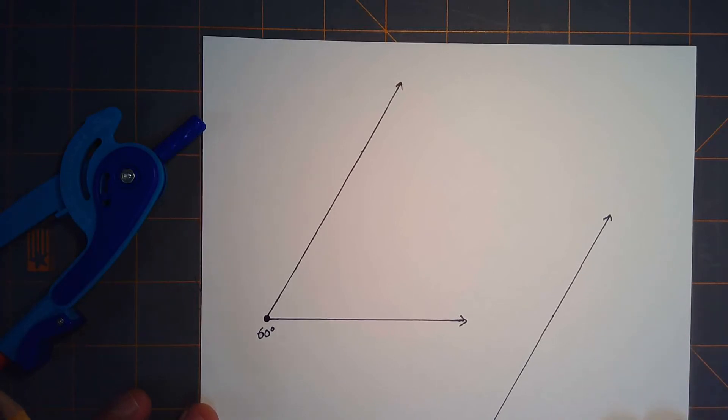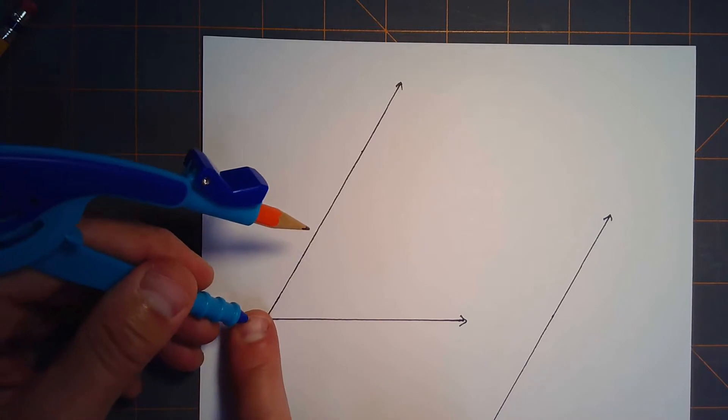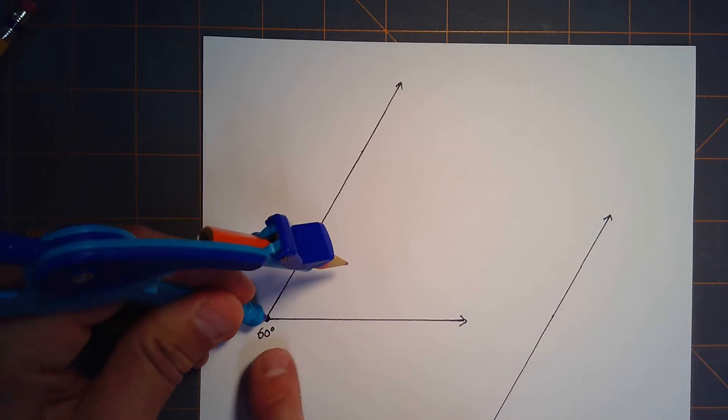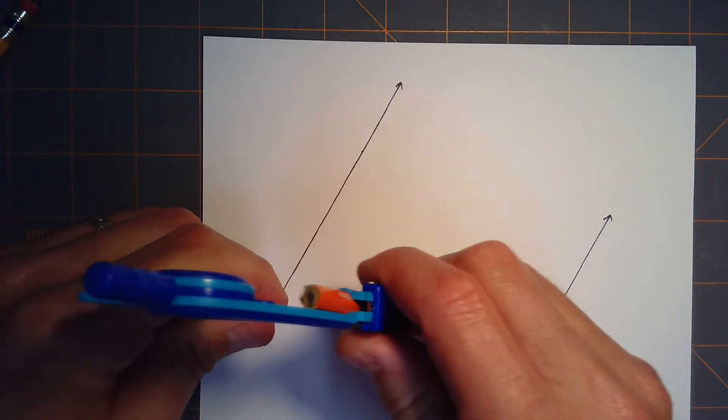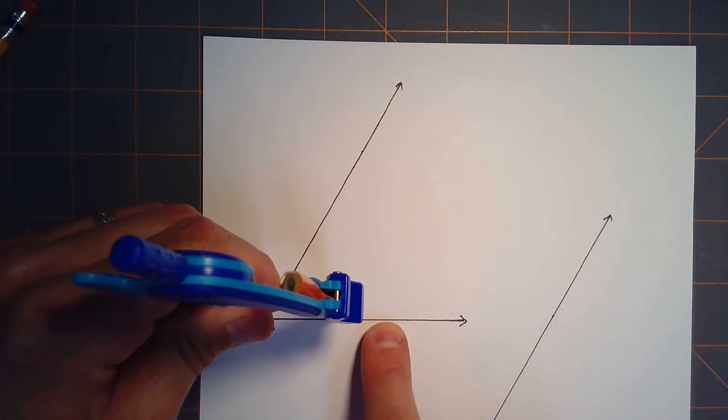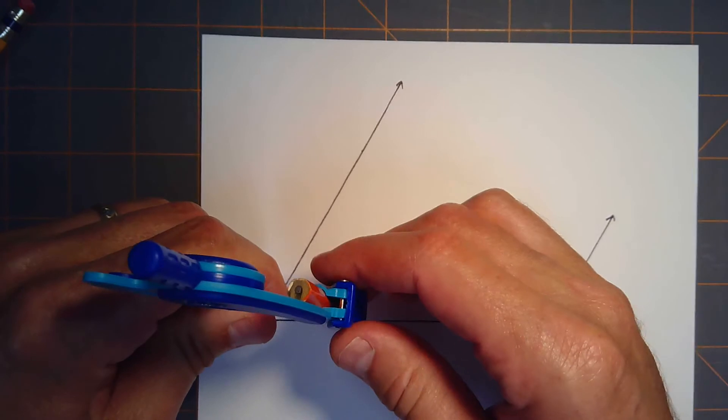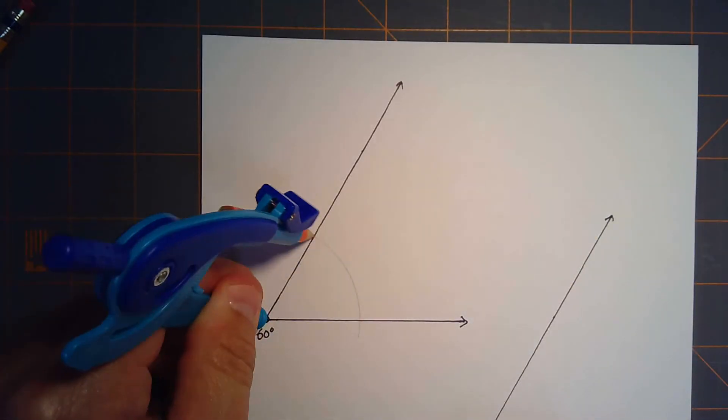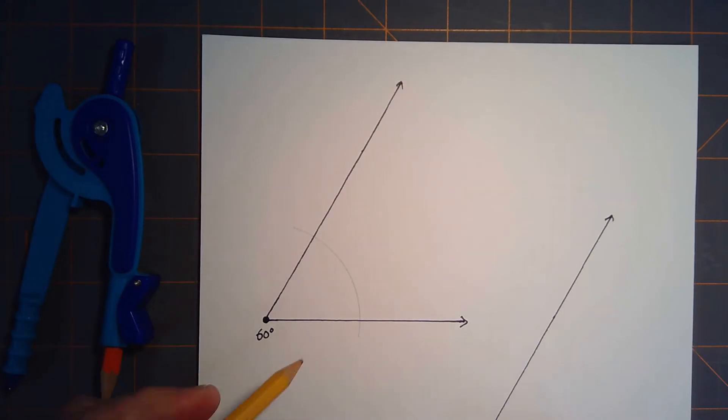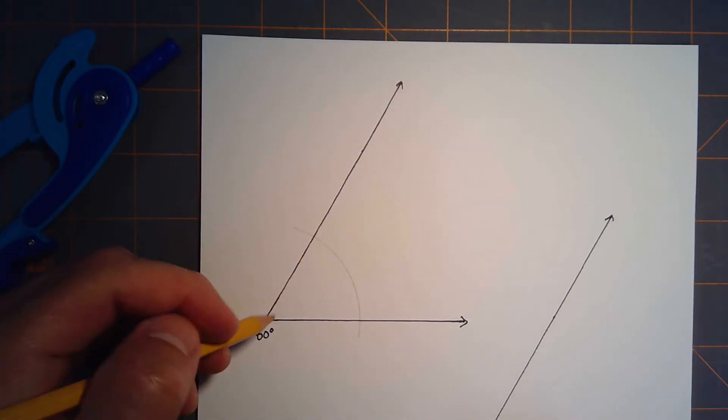The traditional method begins by placing the tip of your compass on the vertex of your angle. I just made a 60-degree angle, and then we're going to make an arc that passes through both rays of the angle. The radius of the arc is arbitrary, so we'll go ahead and make an arc here.